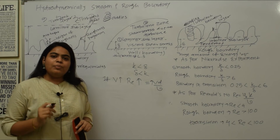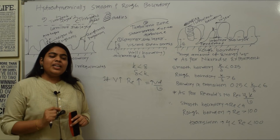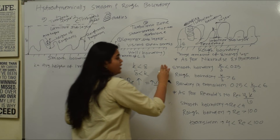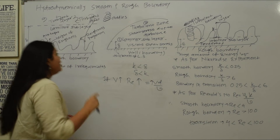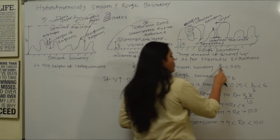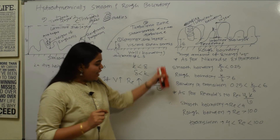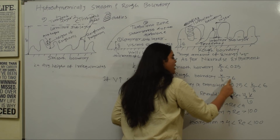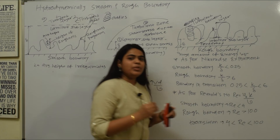Nikuradse has given the criteria for smooth and rough boundaries. He said the smooth boundary condition is k/delta less than 0.25, where k is the height of roughness and delta is the thickness of the laminar sub-layer. For a rough boundary, k/delta is greater than 6. The transition zone boundary lies between 0.25 and 6. These criteria are commonly asked in competitive exams.